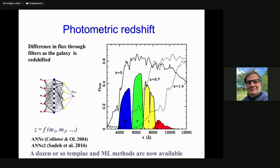Photometric redshifts — this audience needs little introduction. Just to remind you: you observe the sky in four or five filters, for example in Sloan or the Dark Energy Survey. The same galaxy at different redshifts will have different amounts of flux, and it's an ill-posed problem going from fluxes or magnitudes to redshift. When I first heard about it long ago, I thought it was only a problem for one afternoon — but here we are, 20 years later, still working on it. It's absolutely crucial for LSST and Euclid. As we heard this morning from Elizabeth Krauss in the Dark Energy Survey, we spent many years on photo-z. We came up with the neural net approach — NNZ and NNZ2 — which has done a reasonable job, but there are now a dozen or so other methods.